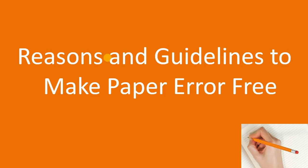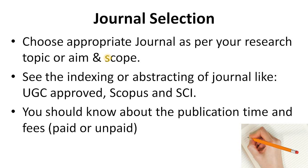Now, after understanding the journal cycle, let's look at the reasons and guidelines to make your paper error-free. Suppose you get a rejection or minor changes — what should you do? Today we will discuss the important factors you should keep in mind and what things you should include in your research paper so that you definitely get quick acceptance from a reputed journal like Scopus or SCI.